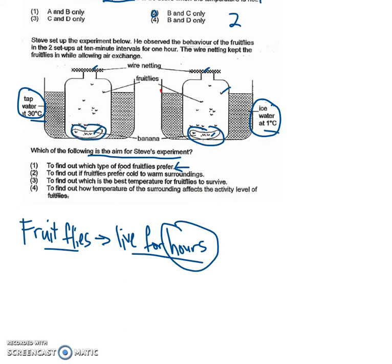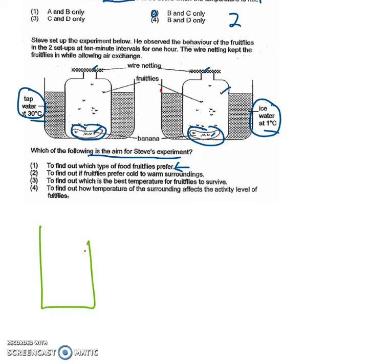If I want to design an experiment to find out which food they prefer, it should look something like this. I would have one jar here, two jars here, and this would be an apple and this would be a banana and there will be some fruit flies over here.